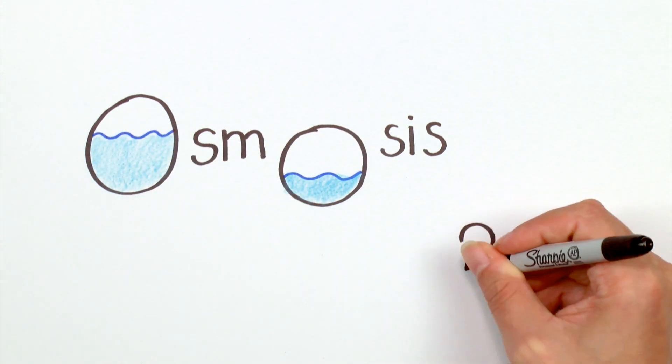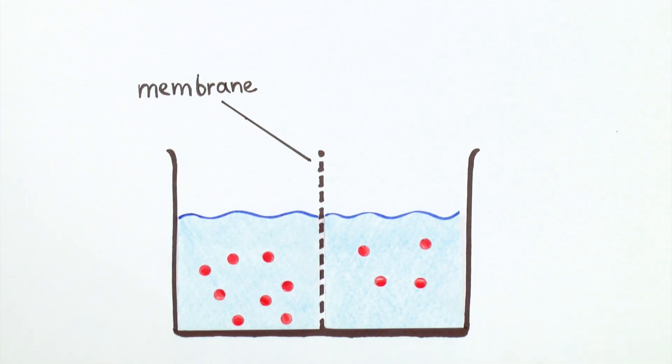What is osmosis? Let's say that you have two liquids, each with different concentrations of salts, separated by a membrane. Osmosis is the exchange across the membrane that allows the concentrations to become equal.